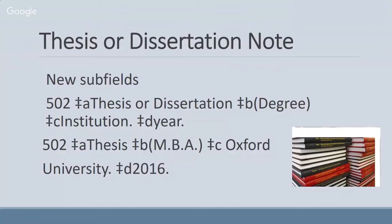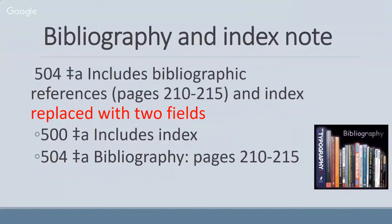If you are an academic library or have a dissertations or thesis collection, there are some new subfields so you can actually indicate what degree they're getting, from what institution, and what year. The 502 field now has a structured pattern — for example, showing that someone got their MBA from Oxford and the date they got it. That provides a little more information for the user, which follows along with RDA thinking. And there's some change with the bibliography and index notes: the 504 field we used to see with 'includes bibliographic references and index' is now split — the index gets its own field and the bibliography gets its own field.